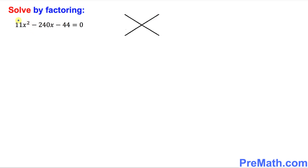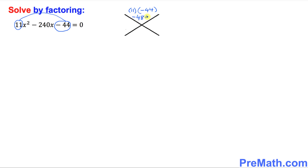Here's the very first step — I want you to create a rainbow. You multiply these two end numbers and put it on this x-factor on the top. That means you're going to multiply 11 times negative 44, and if you multiply that, it's going to give you negative 484.